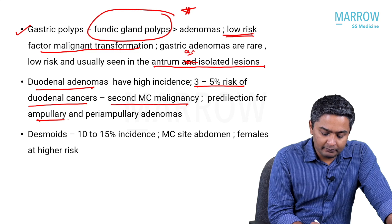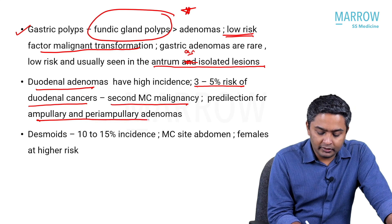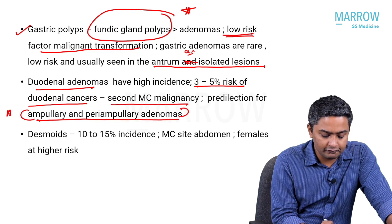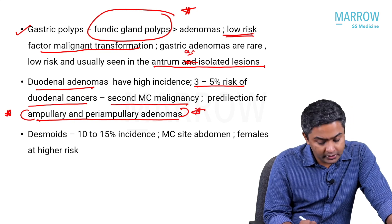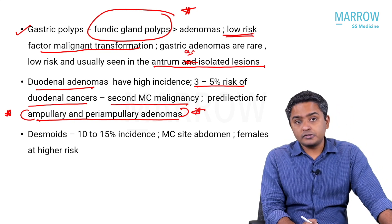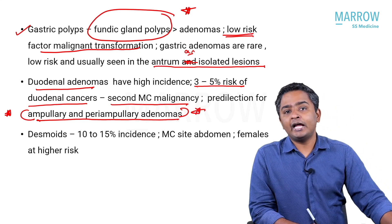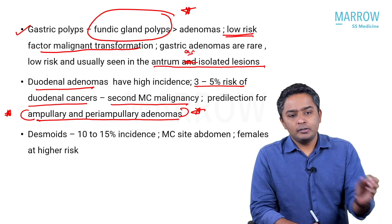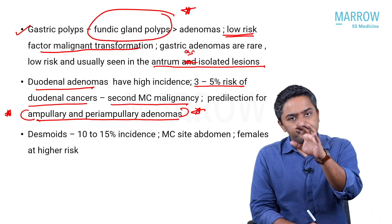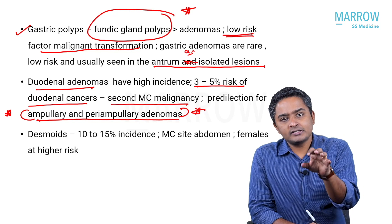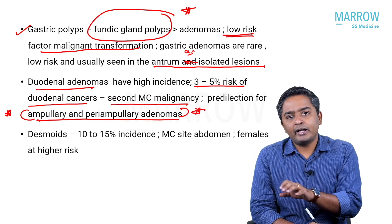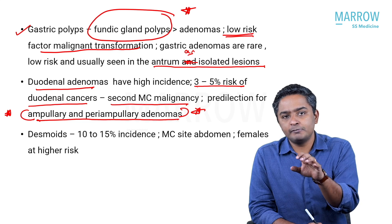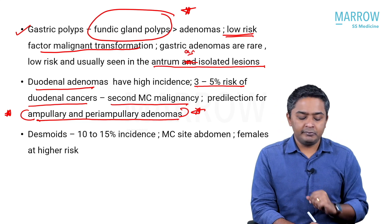There is a high chance of occurrence of ampullary and periampullary adenomas, ampullary and periampullary tumors, gallbladder tumors, and small intestinal tumors. The pancreas and the tumors coming in and around the pancreas and duodenum — ampullary, periampullary, and biliary tract tumors — all come under this category.